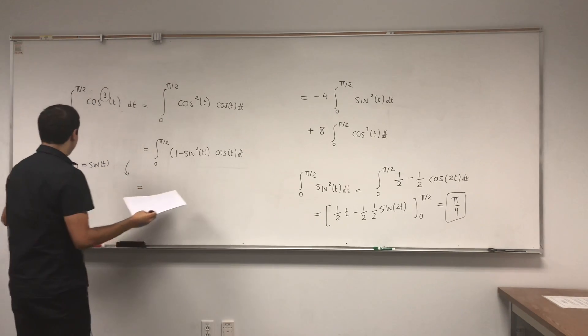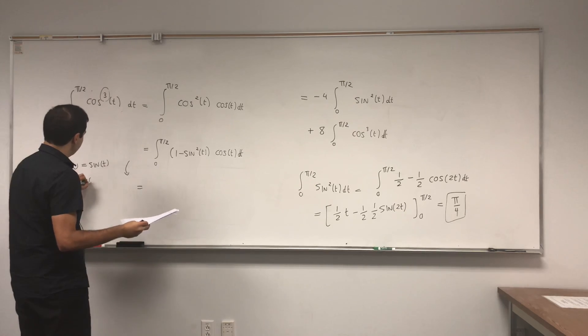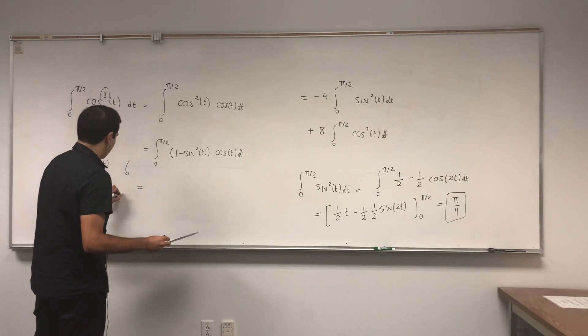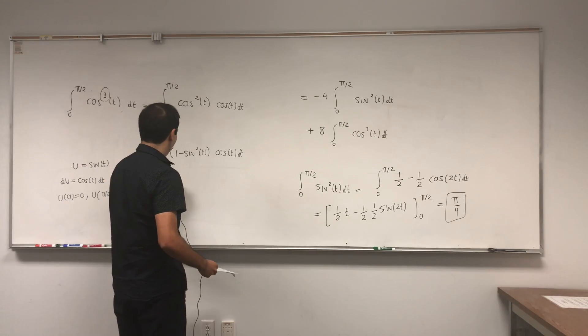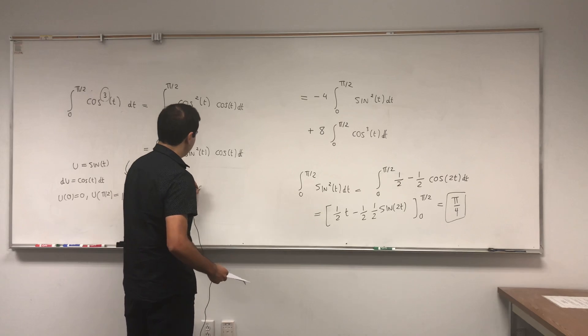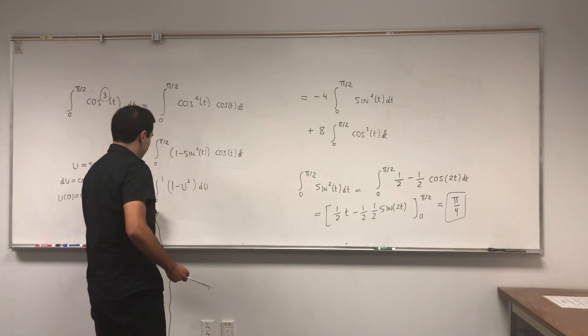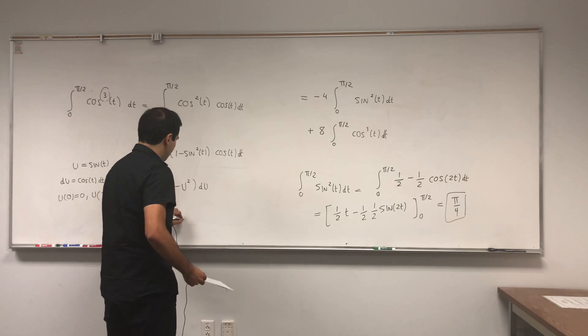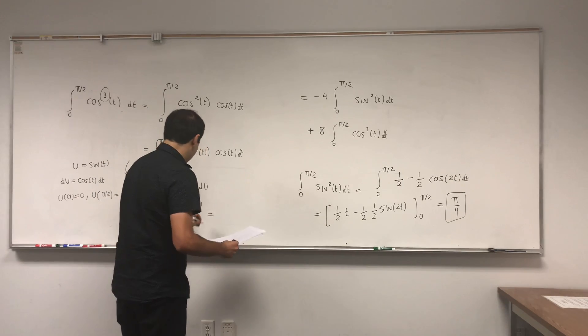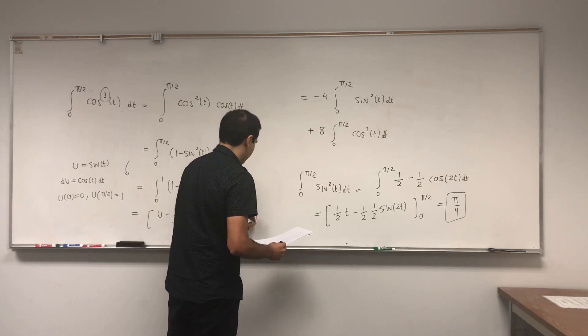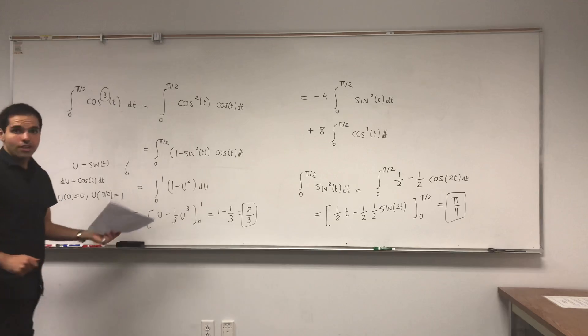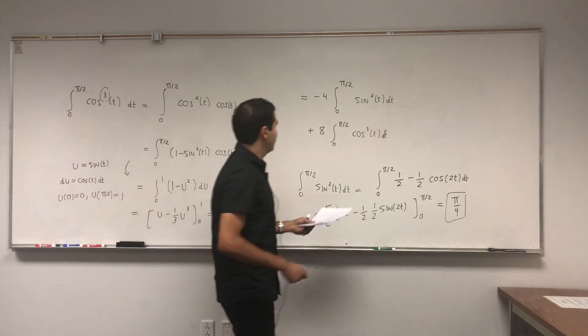Okay, and if you want you just use a substitution u equals sine of t. Then du is cosine of t dt. u of 0 is 0, u of pi over 2 is 1, so sine of pi over 2. So we get integral from 0 to 1 of 1 minus u squared du, and that just becomes u minus one third u cubed from 0 to 1, and it's 1 minus 1 third, which is 2 thirds.